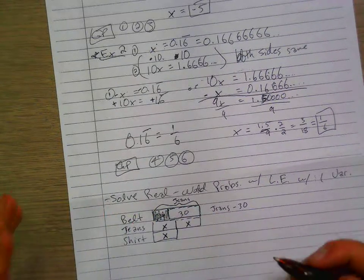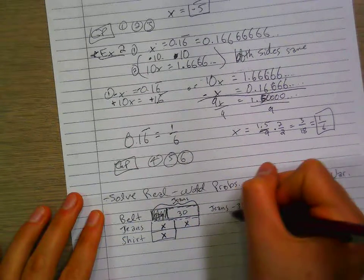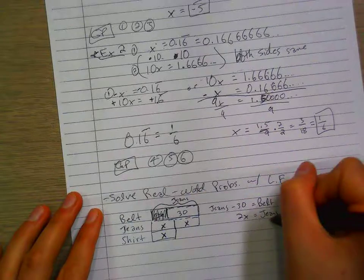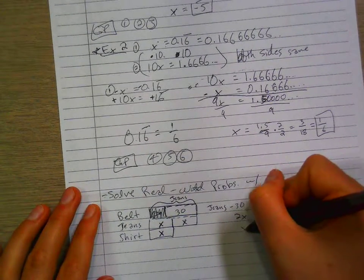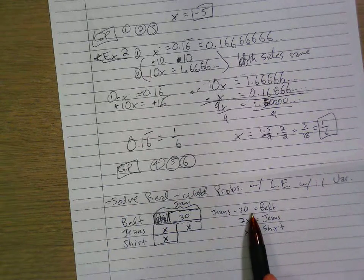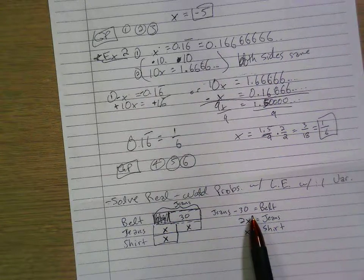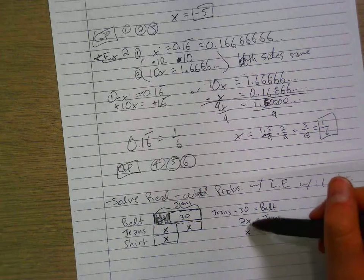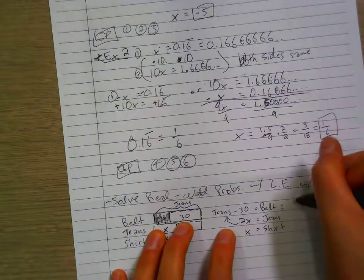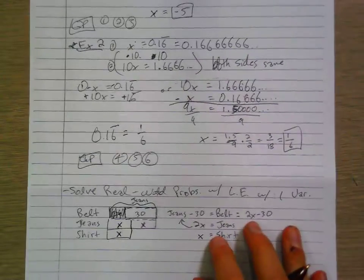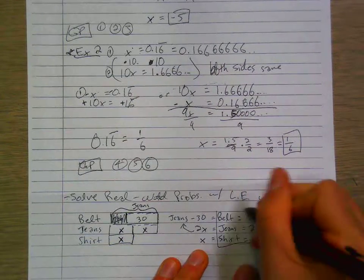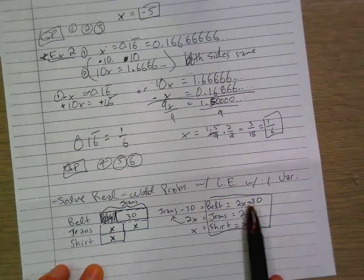We can represent each of these boxes as x. We know that jeans equal 2x. Shirt equals x. But this equation isn't really very mathematical. So let's use an equation to figure out what actually this will be represented with only one variable. If jeans is 2x, all we have to do to find belt is put 2x in for jeans. So it would just be 2x minus 30 is the belt. So now we have all of our equations. Belt equals 2x minus 30, jeans equals 2x, and shirt equals x.